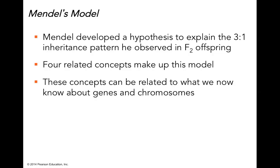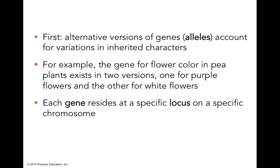He came up with a hypothesis to explain why he consistently got this pattern in the F2 generation. He deduced several related concepts to inform his model, and when we consider the relationship to chromosomes it becomes even clearer how these particulate genes are passed on. He reasoned that alternate versions of a gene — what we now call alleles — account for the variation in inherited characteristics.